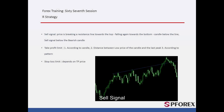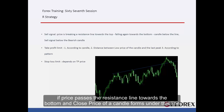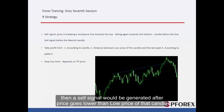Sell signal: When a price crosses the resistance line towards the top with complete candles over the resistance line, and then returns to the resistance line — if price passes the resistance line towards the bottom and the close price of a candle forms under this line, then a sell signal is generated after price goes lower than the low price of that candle.